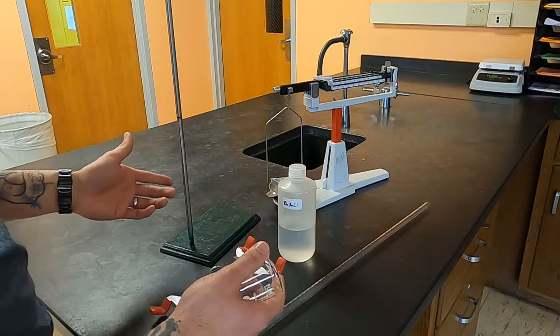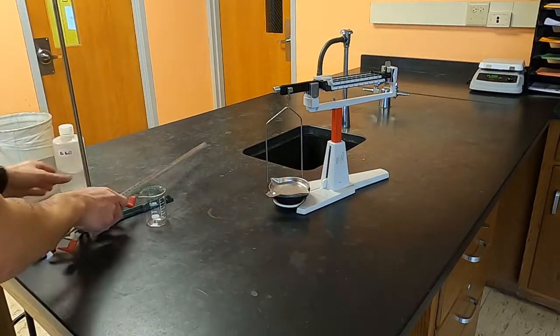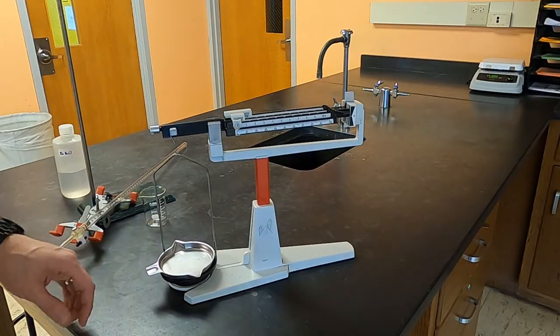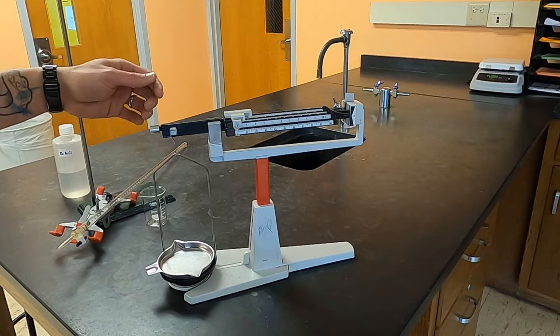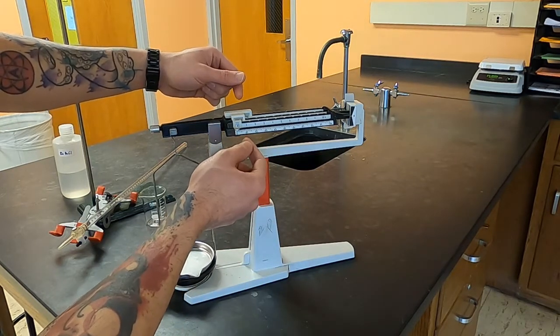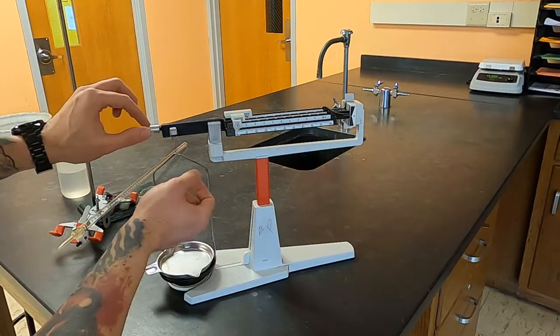The first step is going to be to take the mass of this beaker. When you're using a beam balance you want to first make sure that it is properly calibrated that it zeroes out so you push all of the sliders to zero and you look to see if the two lines match up. If not, you adjust it here.